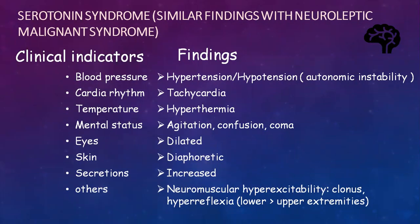Serotonin syndrome has similar findings with neuroleptic malignant syndrome. Blood pressure ranges from hypertension to hypotension — there is autonomic instability. Tachycardia is present, temperature shows hyperthermia, and mental condition includes agitation, confusion, and coma. Eyes: pupils are dilated. Skin is diaphoretic, secretions are increased, and other findings include neuromuscular hyperexcitability such as clonus and hyperreflexia, which is more seen in lower extremities than upper extremities.